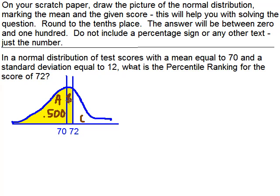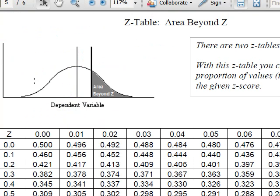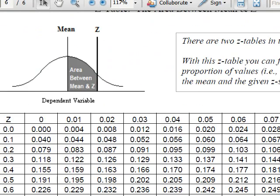That's this area between the mean and our z-score corresponding to a value of 72. So the z-table we're going to want to refer to is not this one, but rather right here, area between the mean and z.